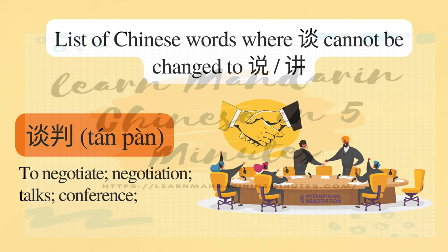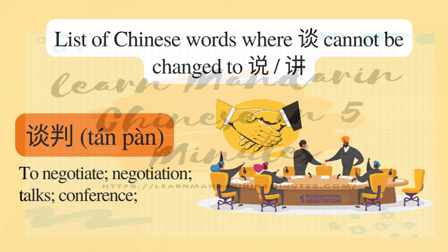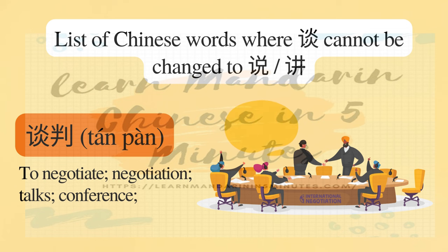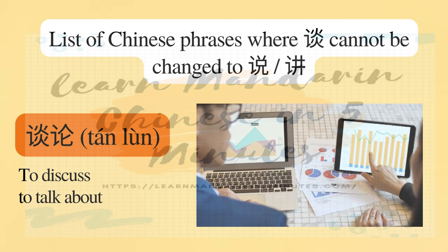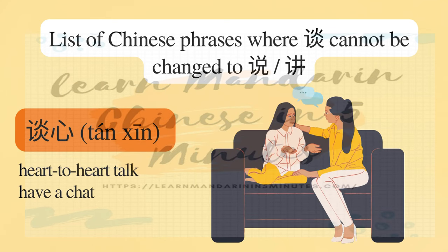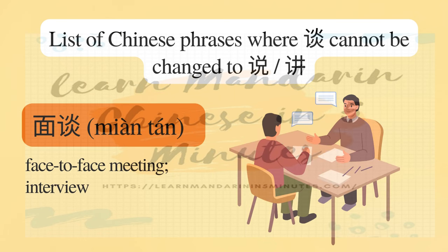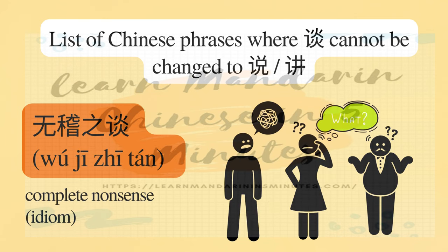List of Chinese words where 谈 cannot be changed to 说 or 讲: 谈判 — to negotiate; negotiation, talks, or conference. 谈论 — to discuss, to talk about. 谈心 — a heart-to-heart talk, to have a chat. 面谈 — a face-to-face meeting or interview. 无稽之谈 — complete nonsense; this is an idiom.